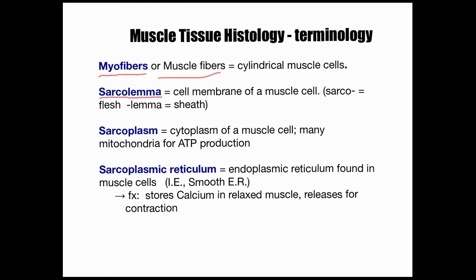It's important to know that the sarcolemma is not the same as the endomysium. The endomysium is connective tissue located superficial or outside the sarcolemma. The sarcolemma is a cell membrane made of phospholipids, which is mainly made up of lipids or fats. So the endomysium is located superficial or outside of that cell membrane of the muscle cell itself.